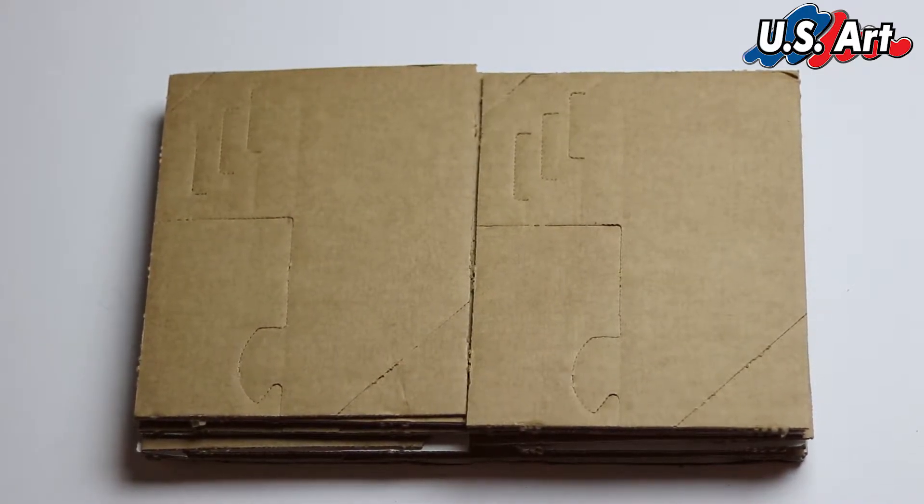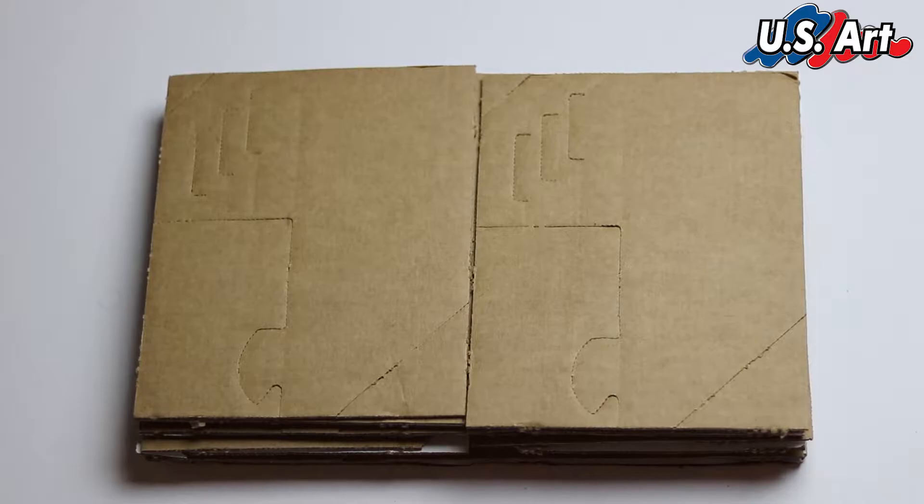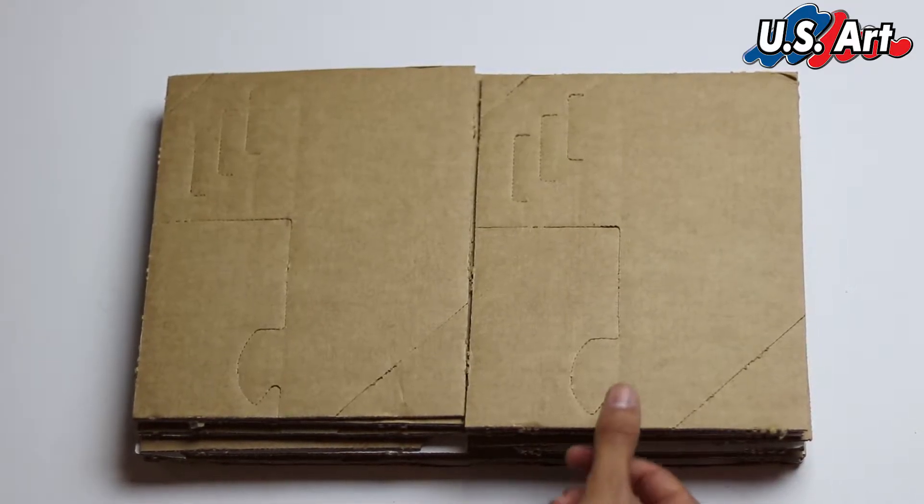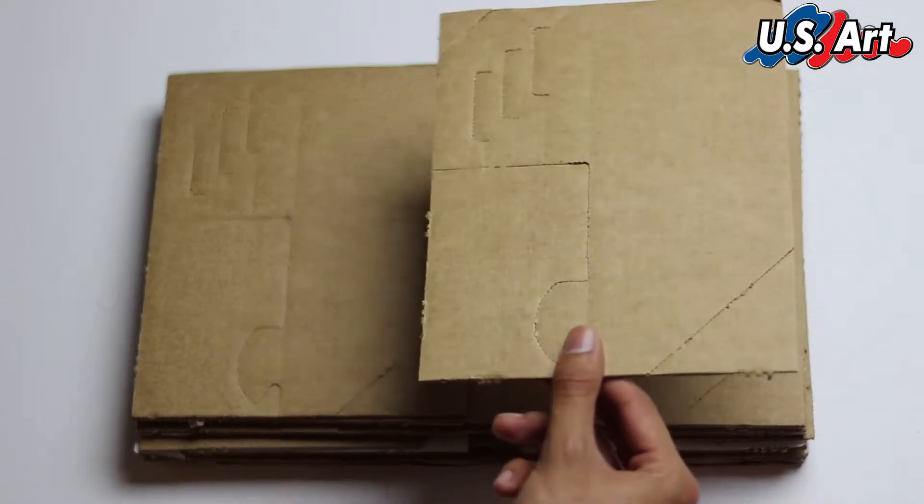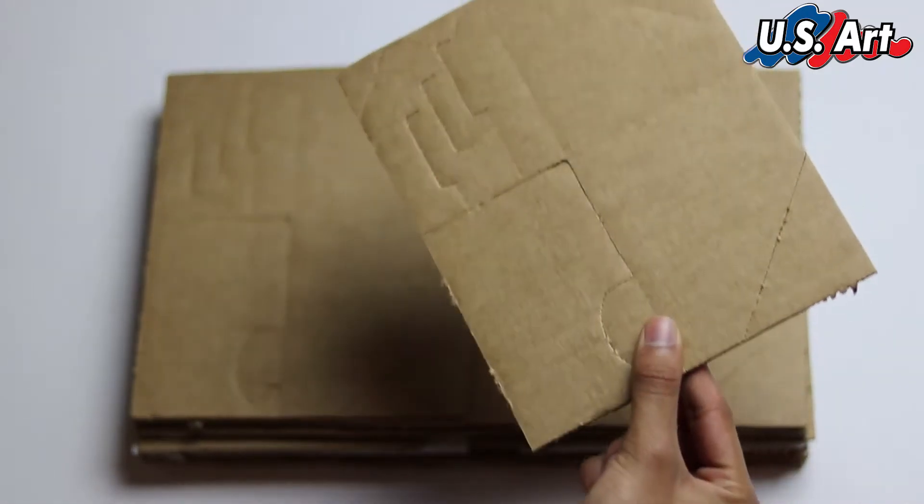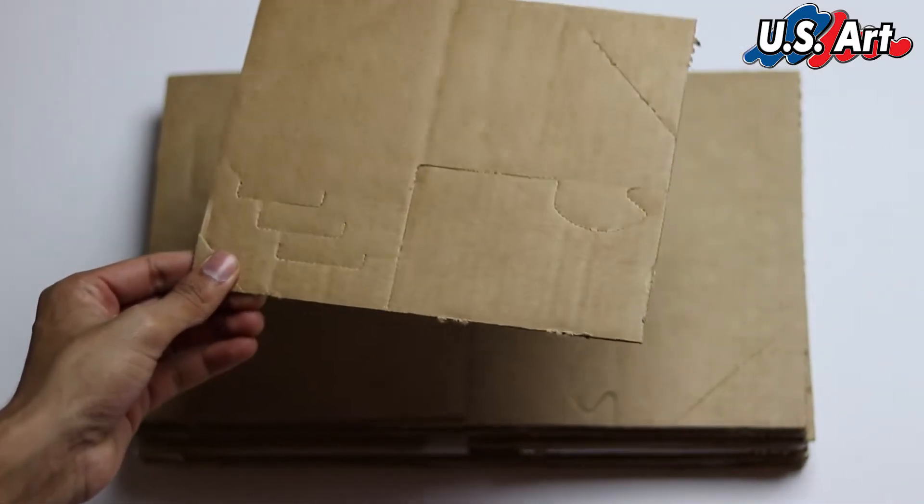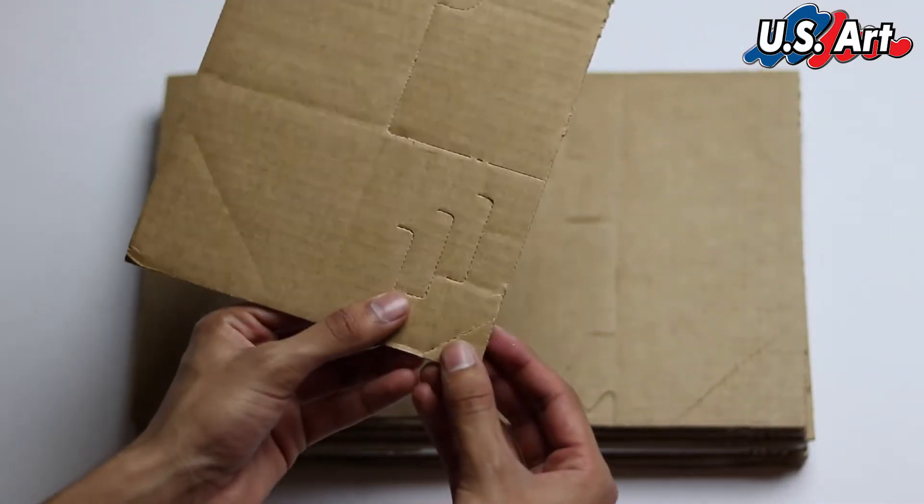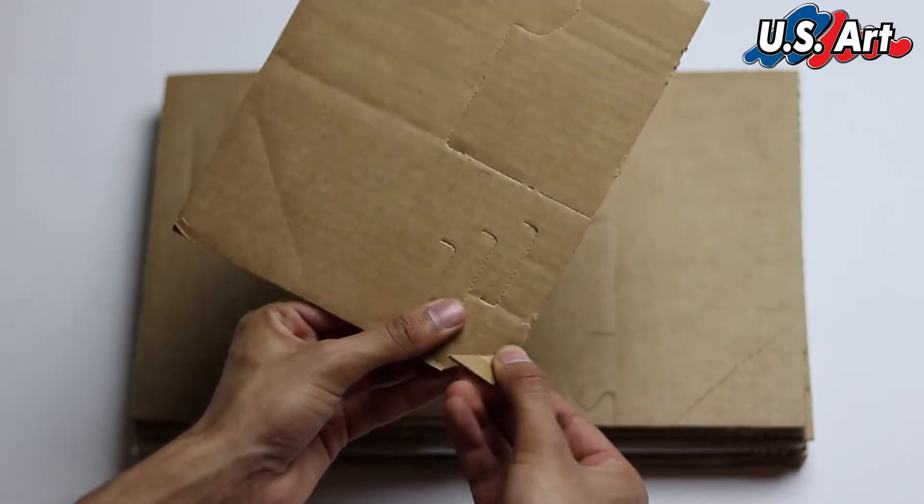The first step is to break off a piece of the cardboard and you should be left with a square like this. There are leftover cardboard pieces, so you would rip those off.